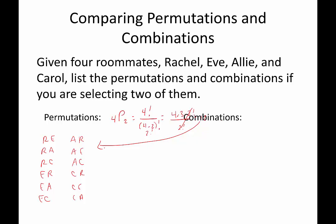For combinations, order doesn't matter. So if Rachel and Eve are chosen, that's the only possibility with Rachel and Eve — we would not also put Eve-Rachel, because that's the same combination. So we have: Rachel-Eve, Rachel-Allie, Rachel-Carol, Eve-Allie, Eve-Carol, Allie-Carol — giving us six combinations. We can see we have twice as many permutations as combinations in this example. That's because the repetition factor happens to be two.